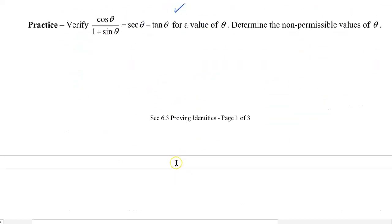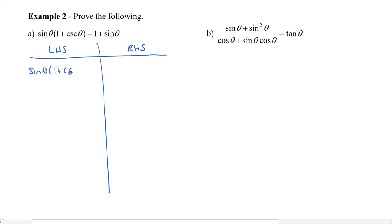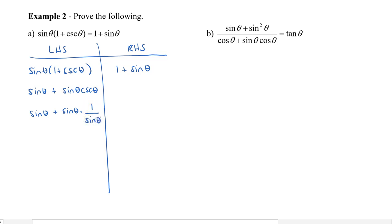Let's take a look at some harder ones. I recommend that when you prove these identities, you draw a t-chart. What I like to do is put left-hand side and right-hand side, and then recopy the expression that we are trying to prove into the table. I see some brackets here, so let's get rid of them by distributing. So I get sin theta times one plus sin theta times cosecant theta. Cosecant theta is equal to one over sin theta with the reciprocal identity, and that's great because the sin theta cancels off. So we're left with sin theta plus one on the left, and on the right side I can also change that around to be sin theta plus one.